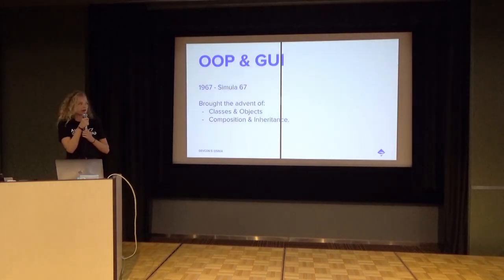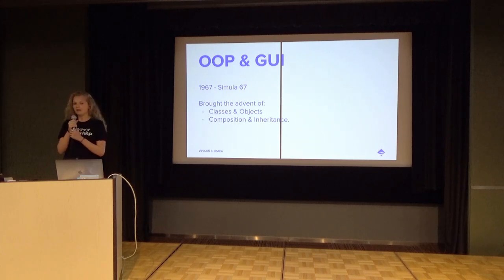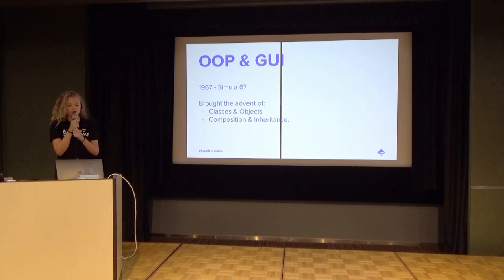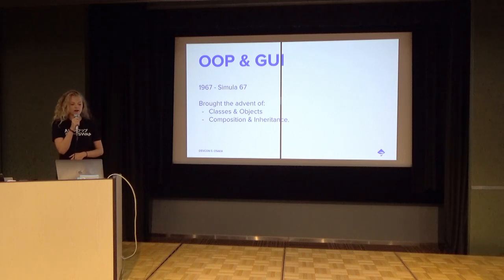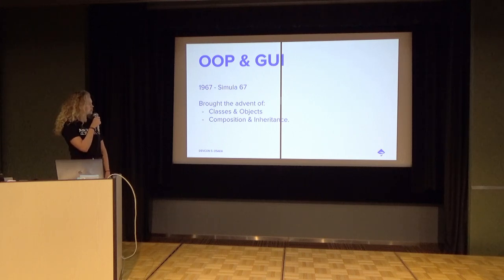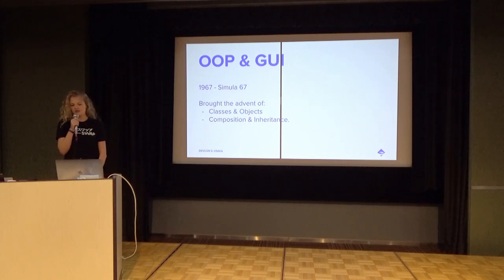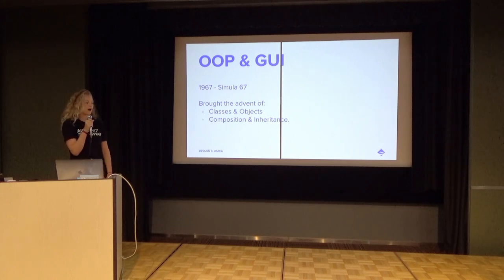Composition and inheritance came about at the advent of object-oriented programming and graphical user interfaces. These brought about classes and objects, and composition and inheritance are how these classes and objects can talk to one another and share code.